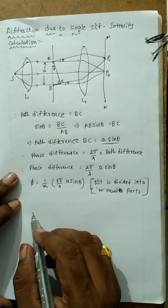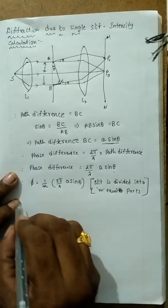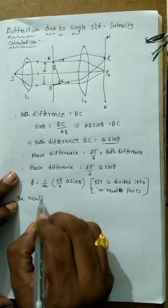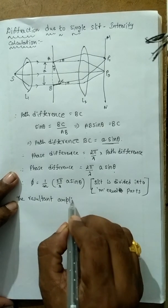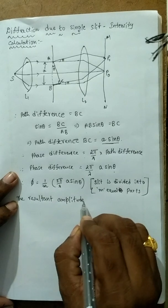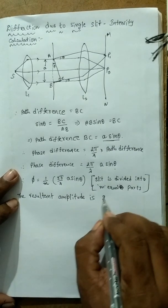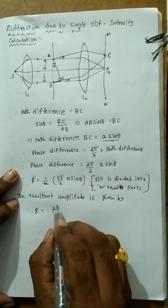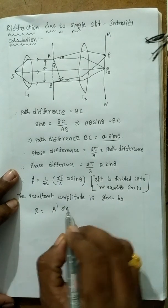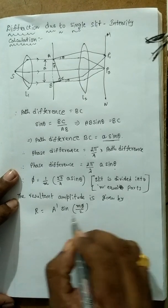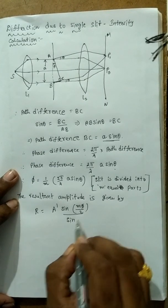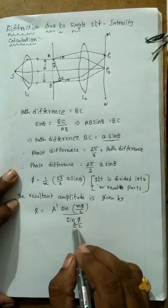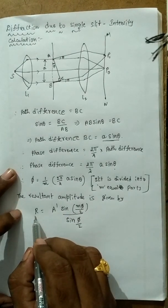According to the vector addition method, the resultant amplitude formula is R = A' × sin(Mδ/2) / sin(δ/2).